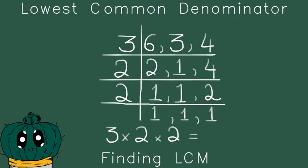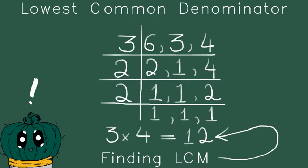3 times 2 times 2. What is 2 times 2? It is equal to 4. What is 3 times 4? That is equal to 12. So this is the LCM. 12 is the LCM.